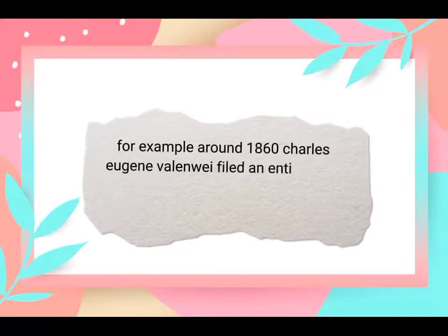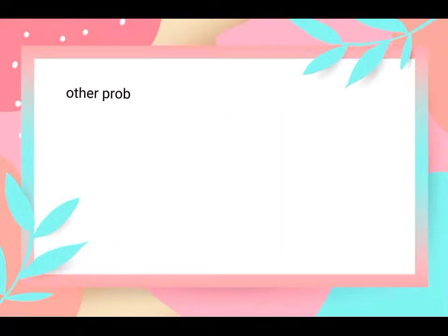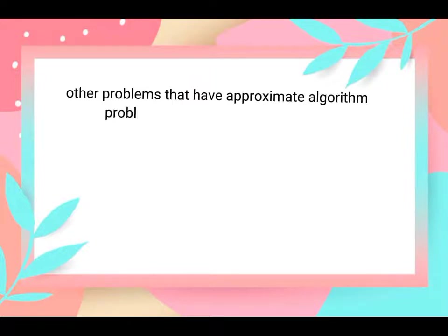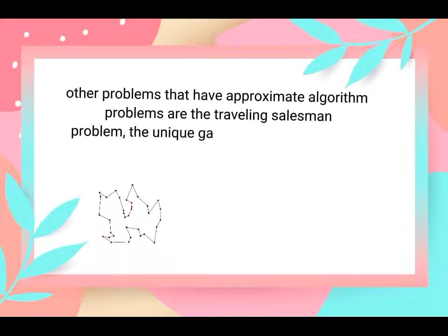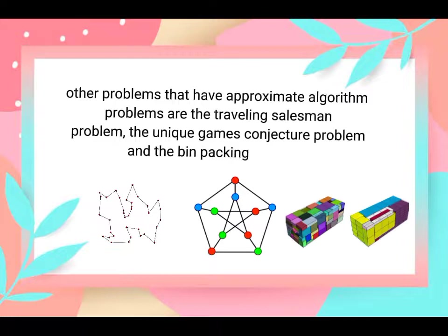Charles Eugene Delaunay filled an entire book with a single approximation to the motion of the moon. Other problems that use approximate algorithms include the traveling salesman problem, the unique games conjecture problem, and the bin packing problem.